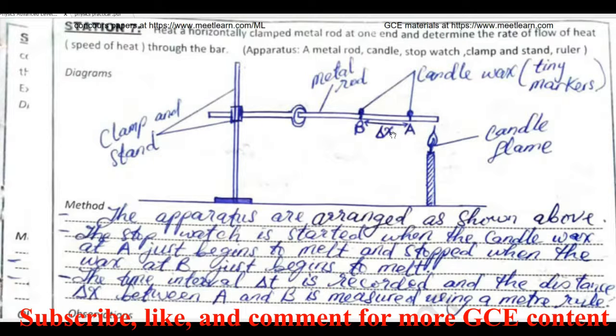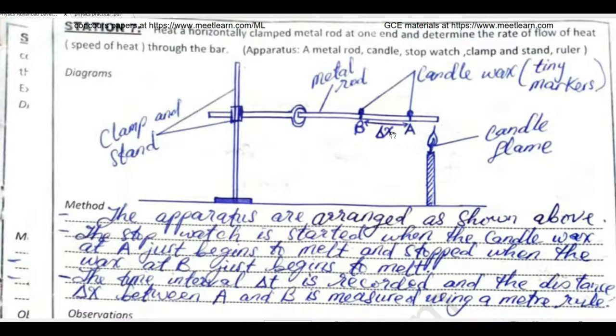Now when are you actually going to start your stopwatch? You start your stopwatch when the candle wax at point A starts melting. Because you are getting a time interval for you to move from point A to point B, and not from one edge of the metal rod to point B. So you have to take very careful note about that, because if you make a mistake with that you're obviously going to get a wrong result.